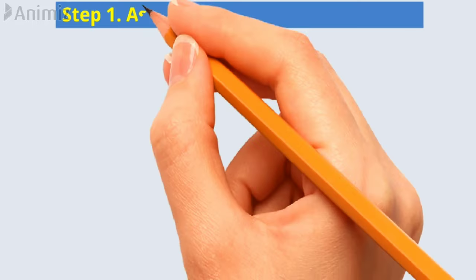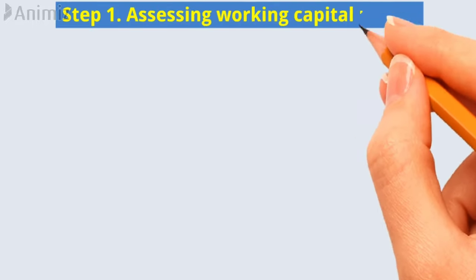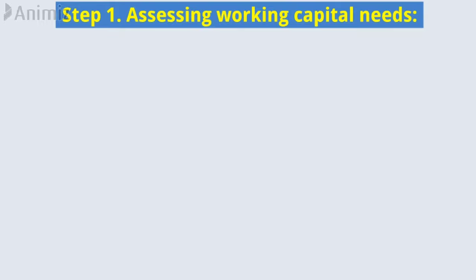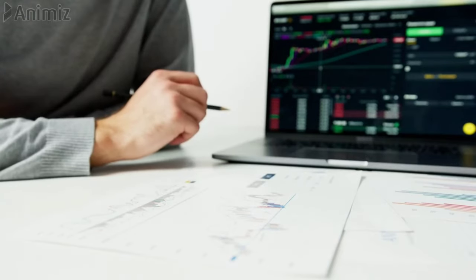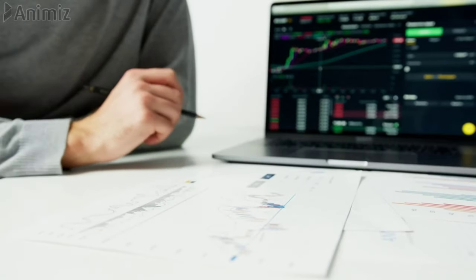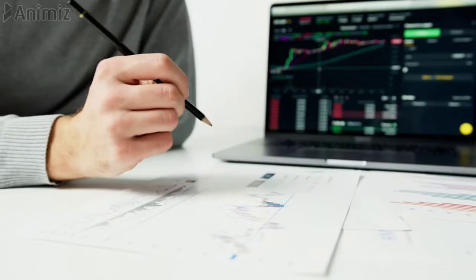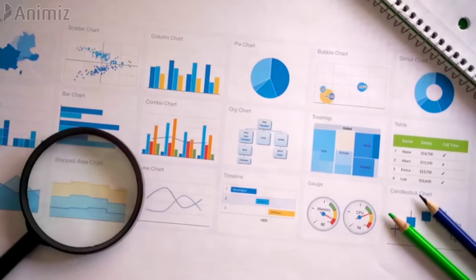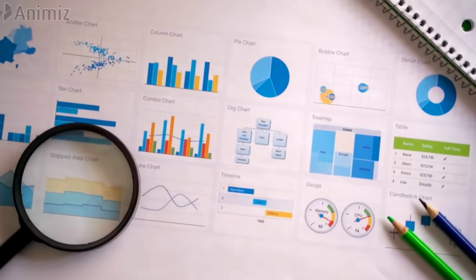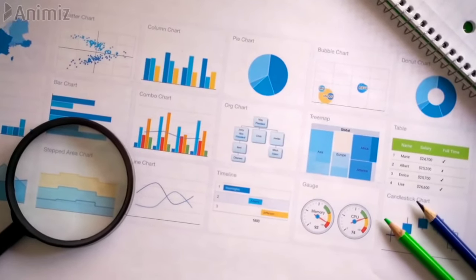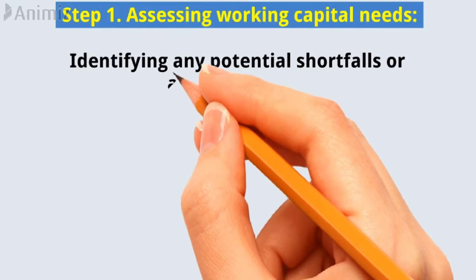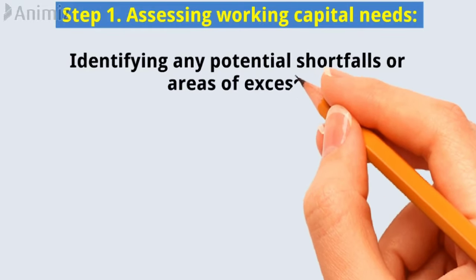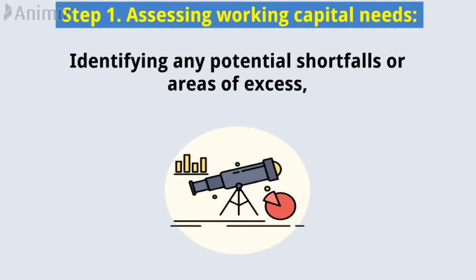Step 1: Assessing working capital needs. The first step in working capital management is to assess the company's working capital needs. This involves analyzing the company's current assets and liabilities, identifying any potential shortfalls or areas of excess, and forecasting future cash flows.